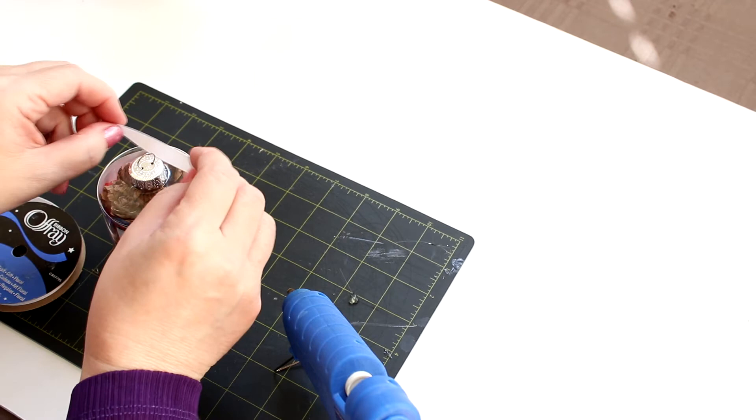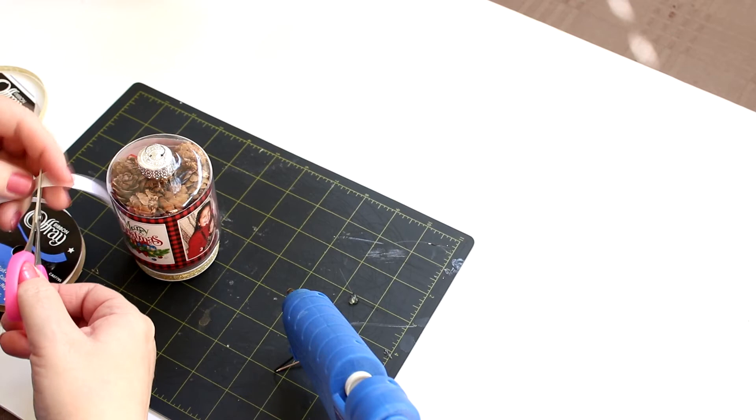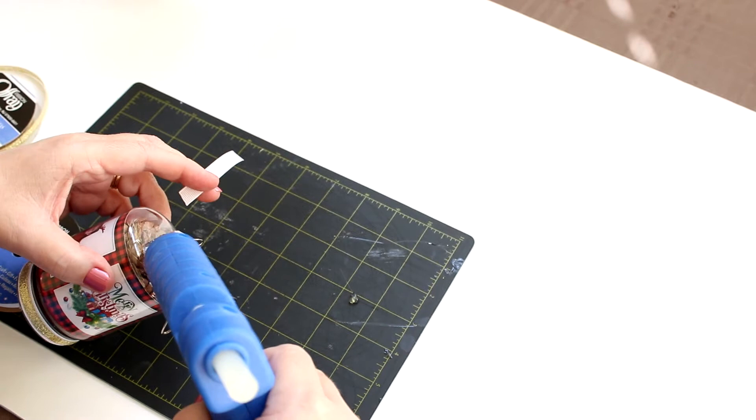And I think I'll go ahead and repeat that ribbon around the top. So let me see. I need to cut a piece that's going to fit. And I'll just repeat that process. So just a little dab of glue.